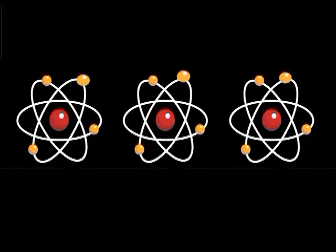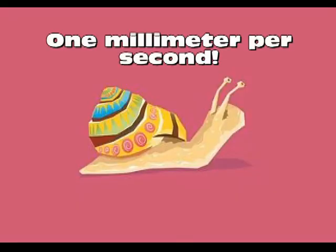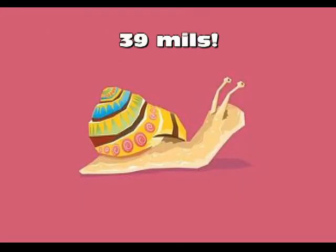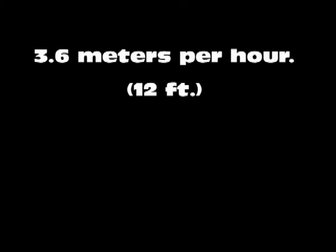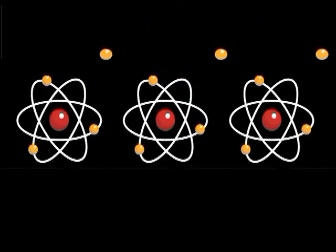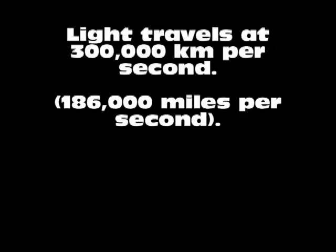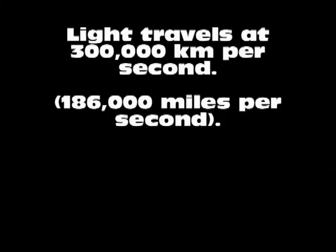In a conductive wire, electricity flows by electrons jumping from one atom to the nearest atom. The speed of movement of these particles is incredibly slow — one millimeter per second, approximately 3.6 meters per hour. However, electrons jump from one atom to the next in such a way that the resulting domino effect makes the current travel as if instantly, at a speed slightly less than the speed of light, which travels at 300,000 kilometers — 186,000 miles per second.